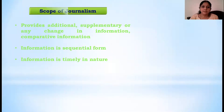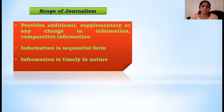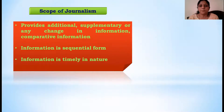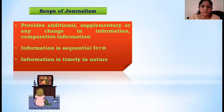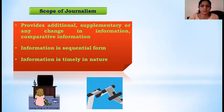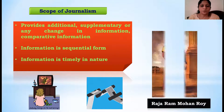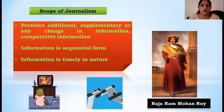Now we will see what is the scope of agriculture journalism. The first thing is it helps in providing additional information, supplementary information, changed information, and comparative information on a timely basis. Journalism helps us to update ourselves and keep our information up to date by knowing about changed or comparative information, which helps in developing our knowledge horizon. The information is presented in a sequential form, easily understood in a logical and timely manner. In India, Rajaram Mohan Rai is called the father of journalism in India, who helped start the flow of information.